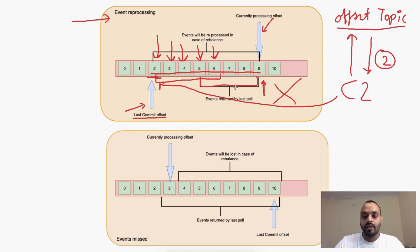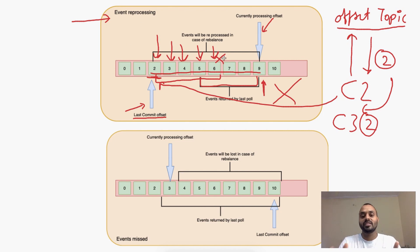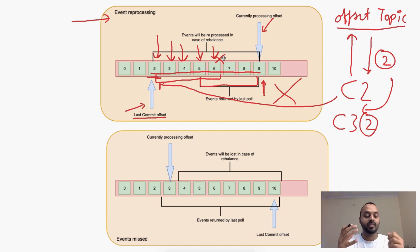If the consumer dies and we have still not updated the last committed offset, then C3 comes in, it will also get offset 2 and will also reprocess those messages. We need a solid committing strategy so that our messages are not reprocessed.